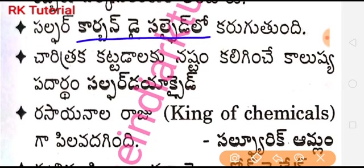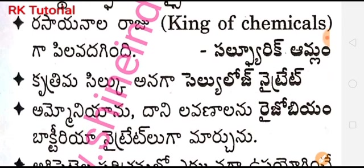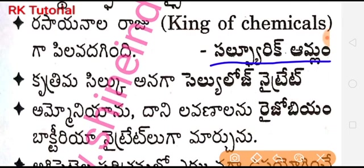Next, the pollutant that causes damage to historical buildings is Sulfur dioxide. Next, the King of Chemicals — Rasainala Raju — is Sulfuric acid. Next, artificial silk is Cellulose nitrate.